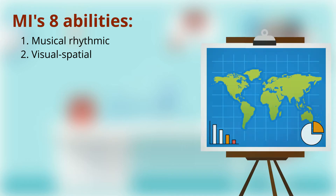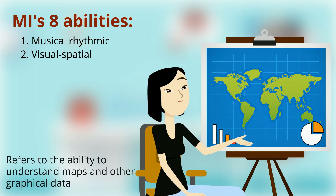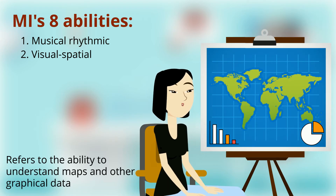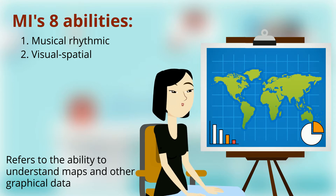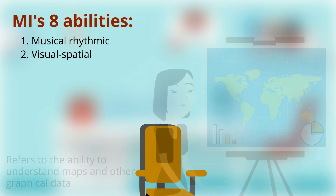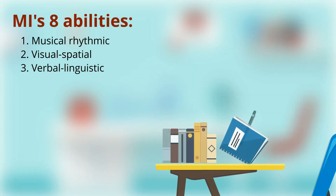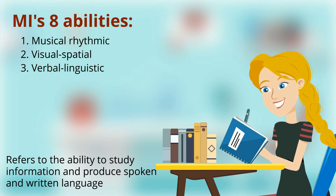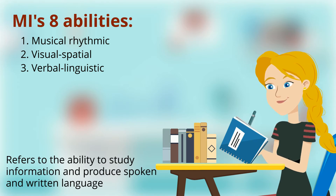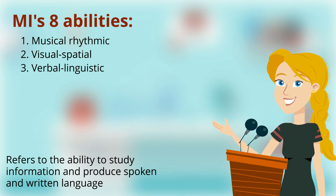The second is Visual-Spatial intelligence, which refers to the ability to understand maps and other graphical data. The third is Verbal-Linguistic intelligence, which refers to the ability to study information and produce spoken and written language.